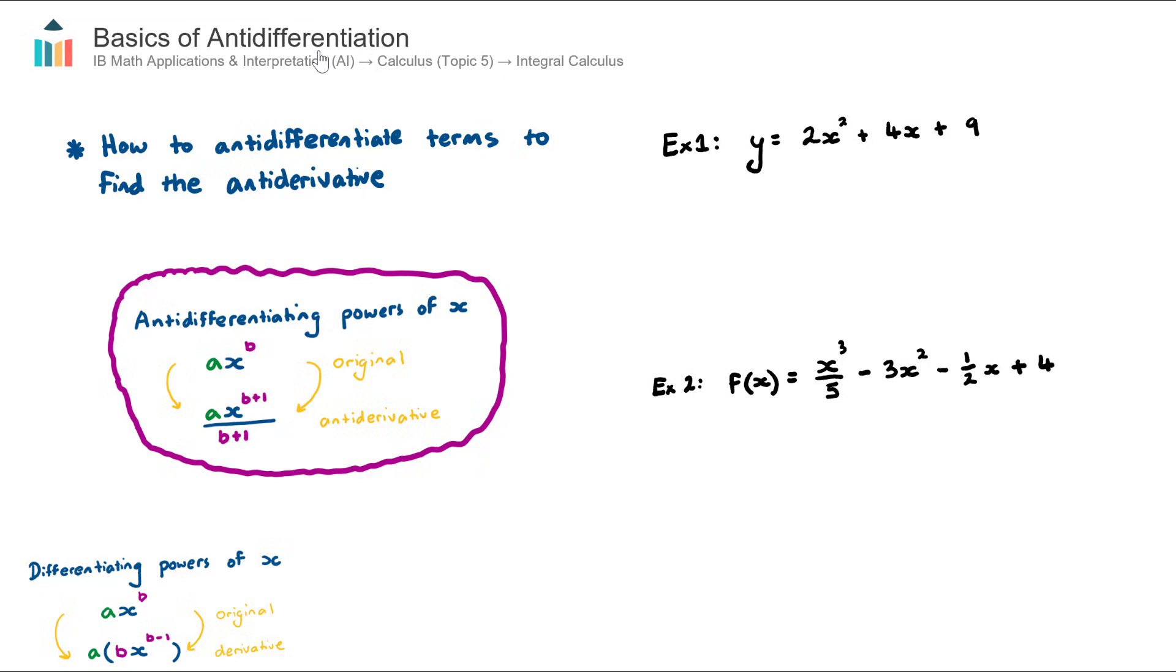In this video we look at the basics of antidifferentiation, and this is the second in a four-part video series on the subtopic of integral calculus. So we're talking about topic five here, calculus in the AI course, and in topic five there are two main areas. We have differential calculus and integral calculus, so we're now looking at the second of those.